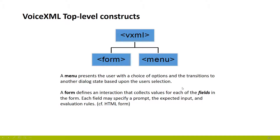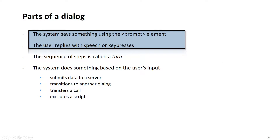A part of a dialogue system says something using a prompt element, just like the Hello World we just heard. The user replies with speech or key presses, and this sequence is called a turn. The dialogue consists of different turns. The system then does something based on user input — either submits data to the server, transfers you to another part of the application, transfers a call, or executes a script.